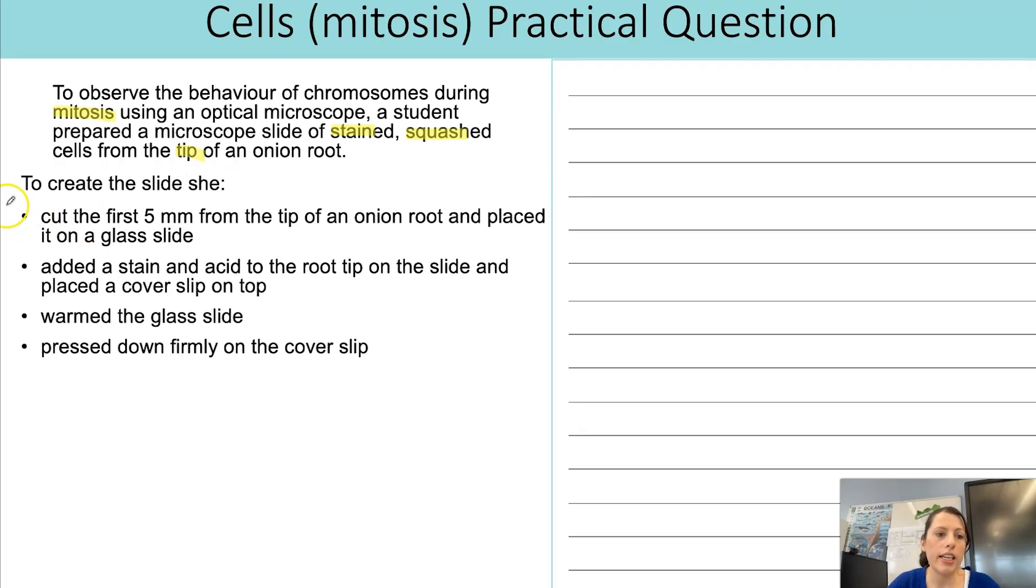To create the slide she cut the first five millimeters from the tip of an onion root and placed it on a glass slide. Then added a stain and acid to the root tip, put a cover slip on top, warmed the glass slide and then pressed down firmly on the cover slip. So those would be the key things that stand out to me from the method that might come up as something that we have to justify or explain. And the bits in the first paragraph I was highlighting because that indicates to me what the topic is going to be about and then I can start to think of key words that link to that topic.